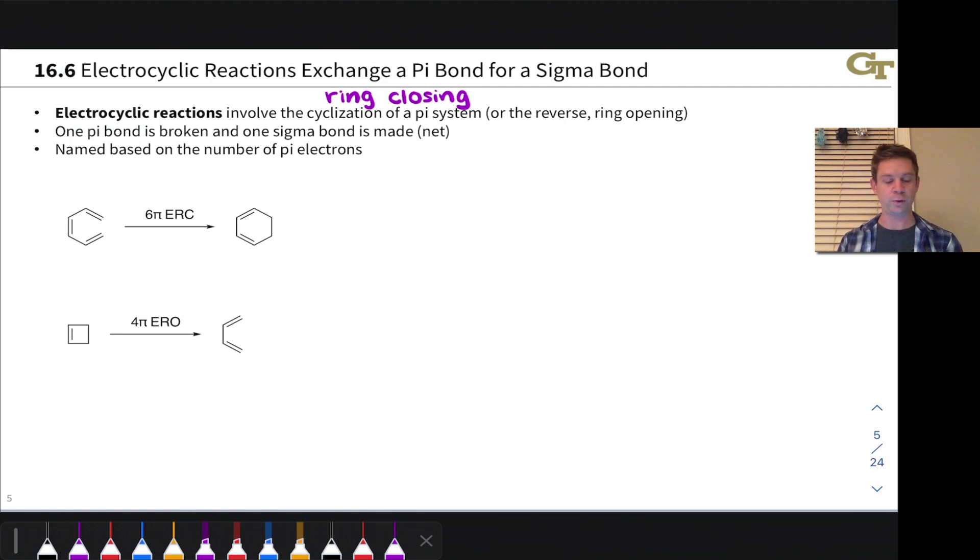So here at the top, for example, we have a six-pi reaction where six pi electrons are moving around in a circle and the new sigma bond is really formed by this arrow highlighted in orange. So this is a six-pi electrocyclic ring closing reaction.